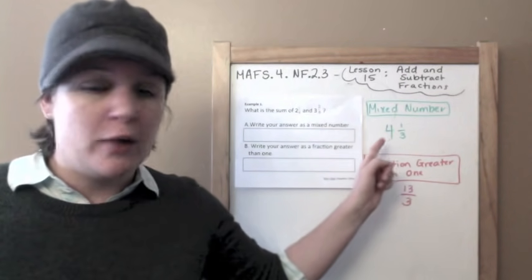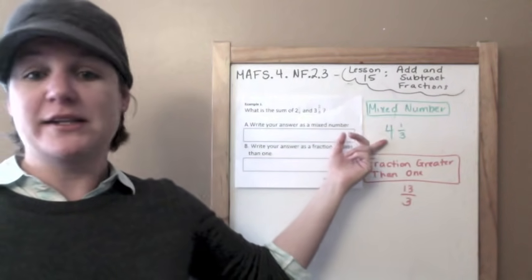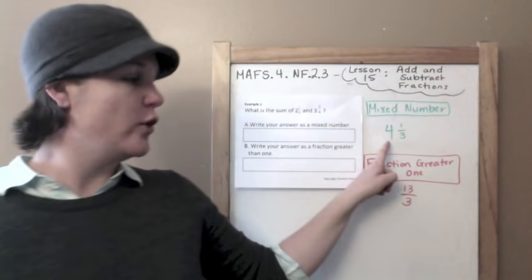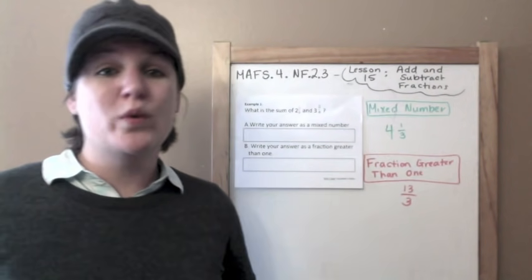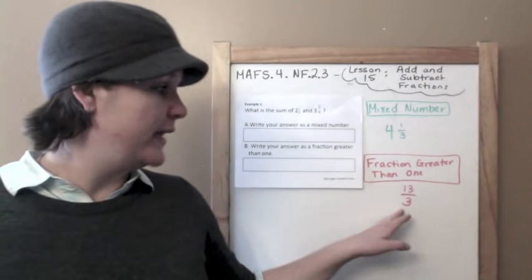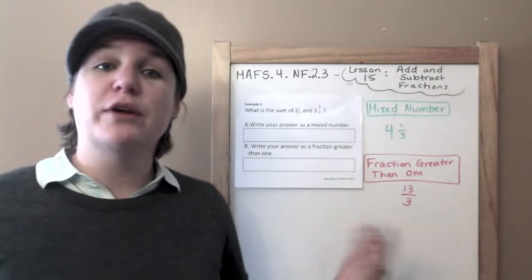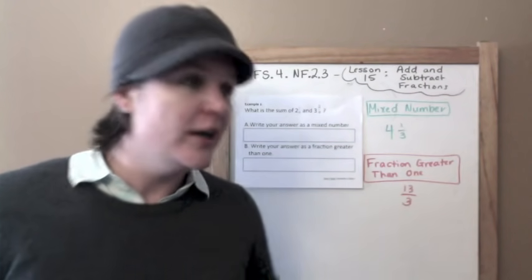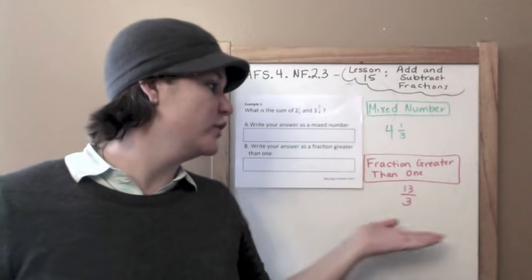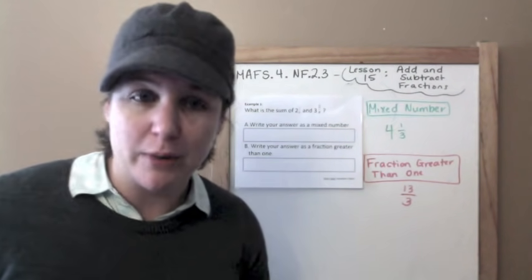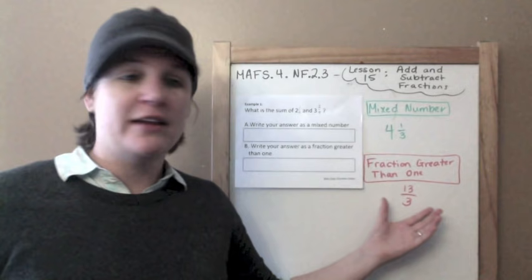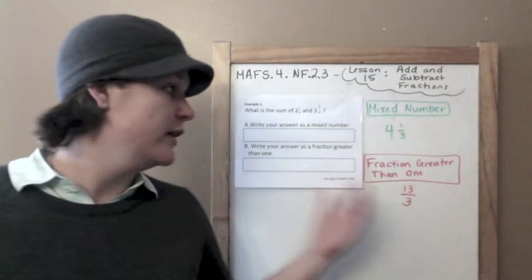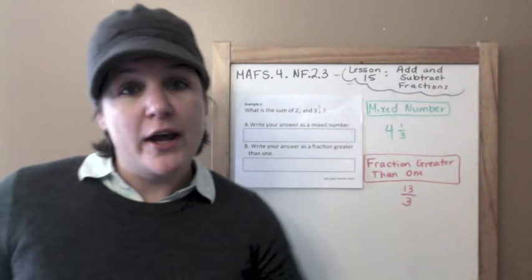Before we get started, I want you to know that this is a mixed number. A mixed number has a whole number combined with a fraction, and this would be considered a fraction greater than 1. We used to call these improper fractions, you can still call them that, but I think the FSA will refer to them as fractions greater than 1.